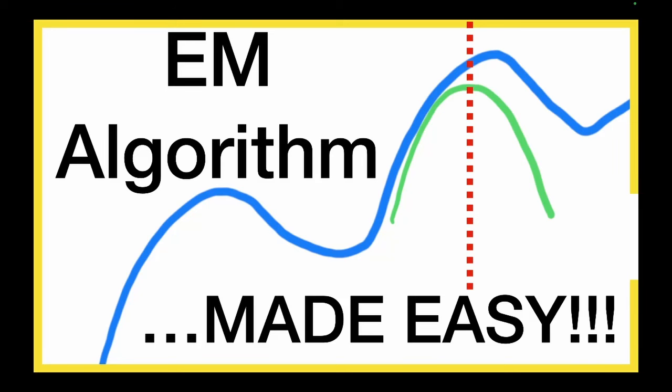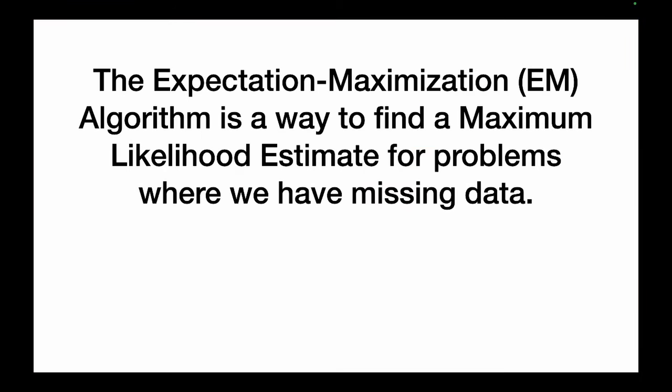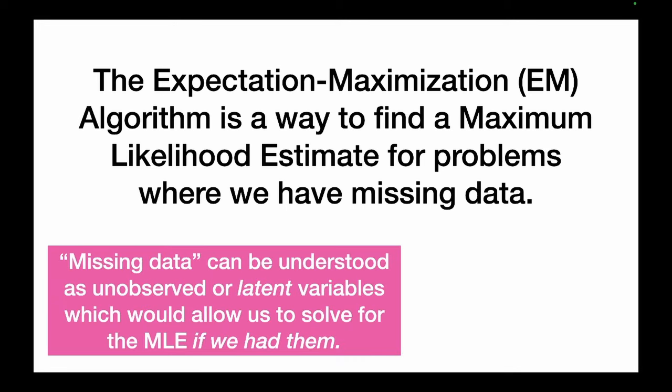Let's learn about the EM algorithm. The expectation maximization, commonly called the EM algorithm, is a way to find a maximum likelihood estimate for problems where we have missing data. Missing data can be understood as unobserved, or what we call latent variables, which would allow us to solve for the MLE if we had them.